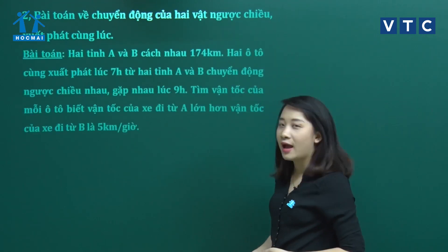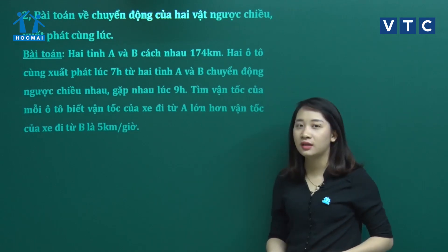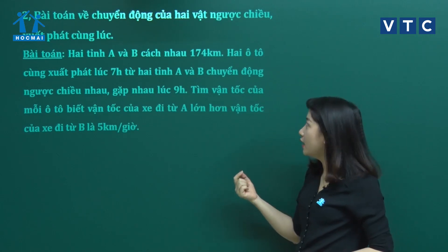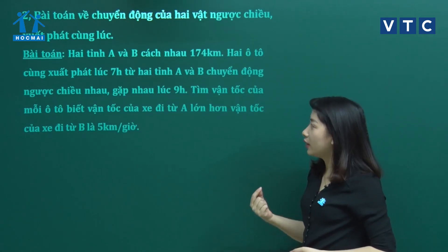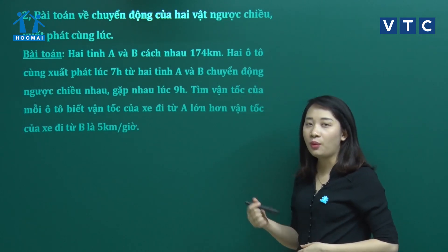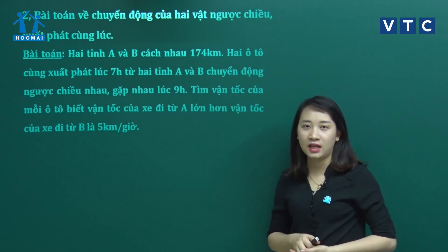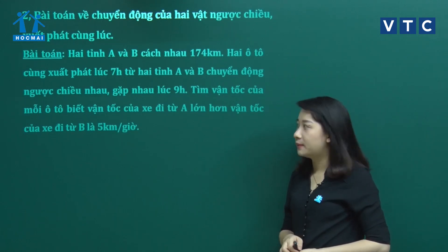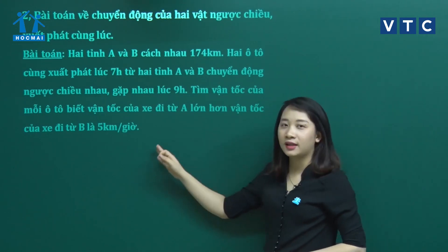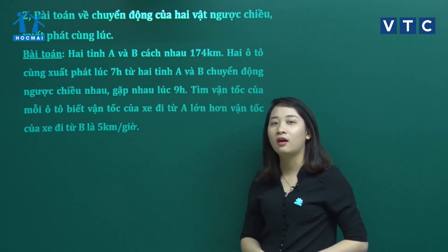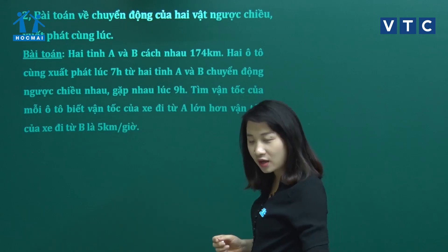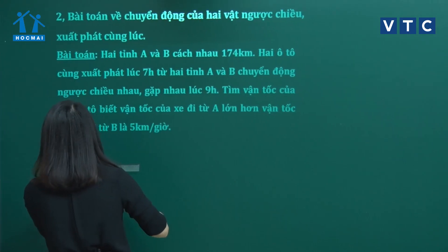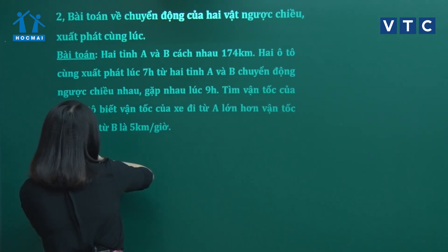Bài toán: 2 tỉnh A và B cách nhau 174 km. 2 ô tô cùng xuất phát lúc 7 giờ từ 2 tỉnh A và B, chuyển động ngược chiều nhau và gặp nhau lúc 9 giờ. Tính vận tốc của mỗi ô tô, biết rằng vận tốc của xe đi từ tỉnh A lớn hơn vận tốc của xe đi từ tỉnh B là 5 km trên giờ. Khi đọc bài toán, các bạn phải phân tích được các đại lượng hoặc thể hiện dưới dạng sơ đồ.